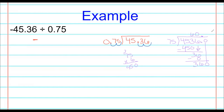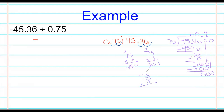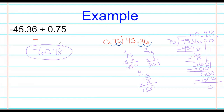75 goes into 360 — let's try four times. 5 times 4 is 20, 4 times 7 is 28 plus 2 is 30, so 4 times 75 is 300. Then 75 goes into 600 — let's try 8. 8 times 75 is 600 exactly, with no remainder. So our answer is negative 60.48.